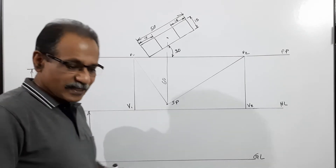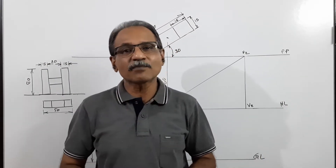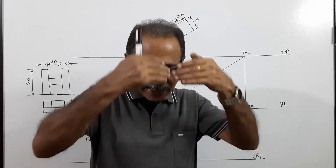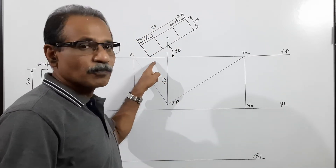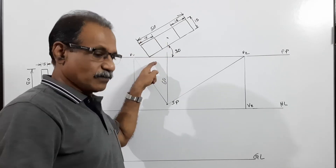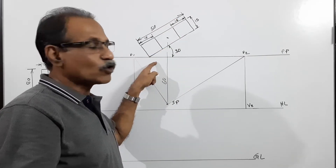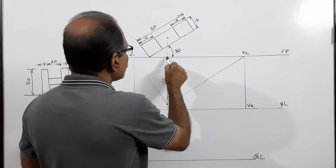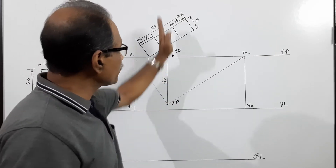This letter H is standing on the ground with the face of the letter making 30 degrees to PP (picture plane), with one vertical edge of the nearest square leg on PP. The station point is 60mm in front of PP.